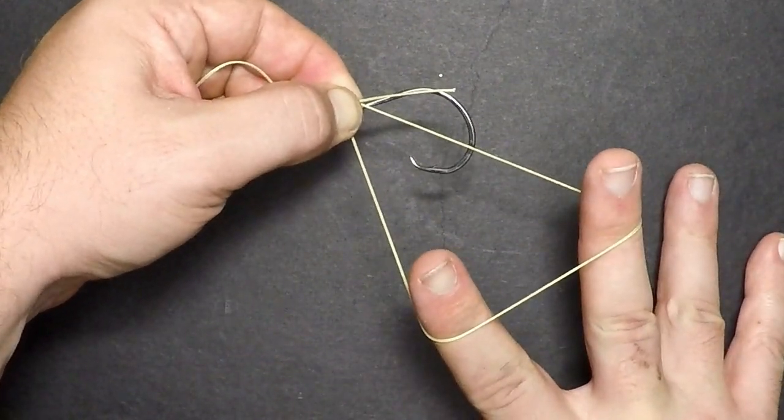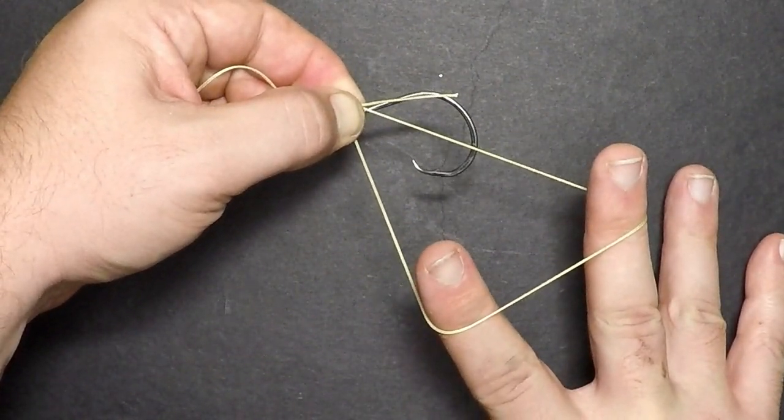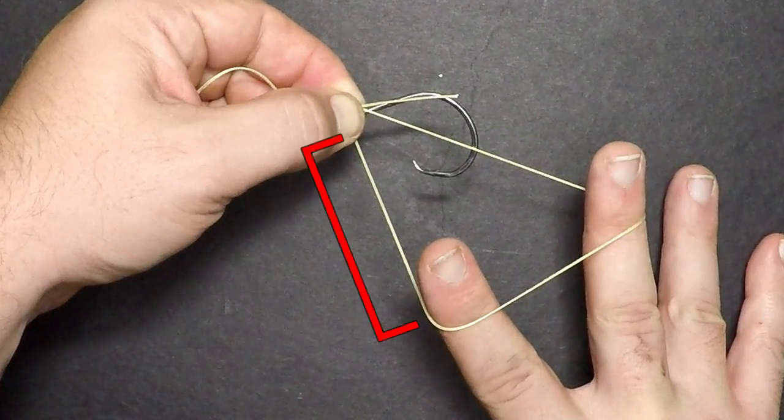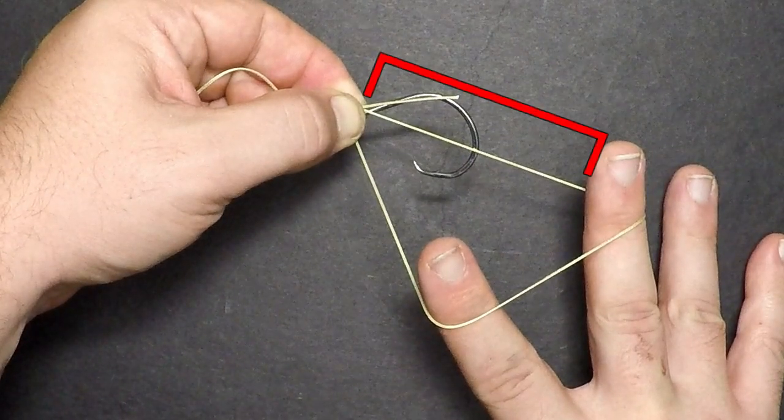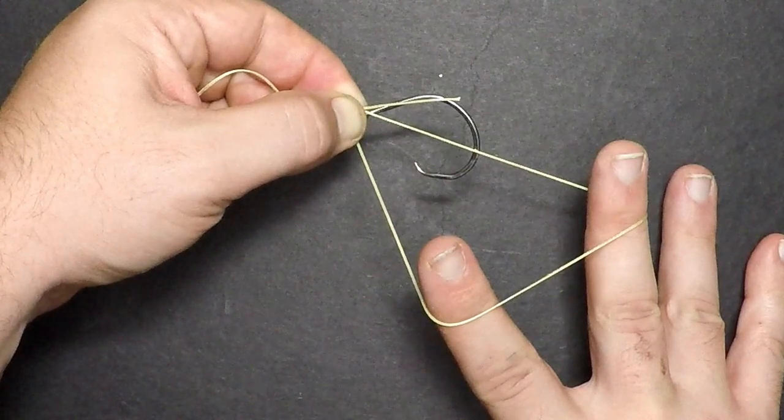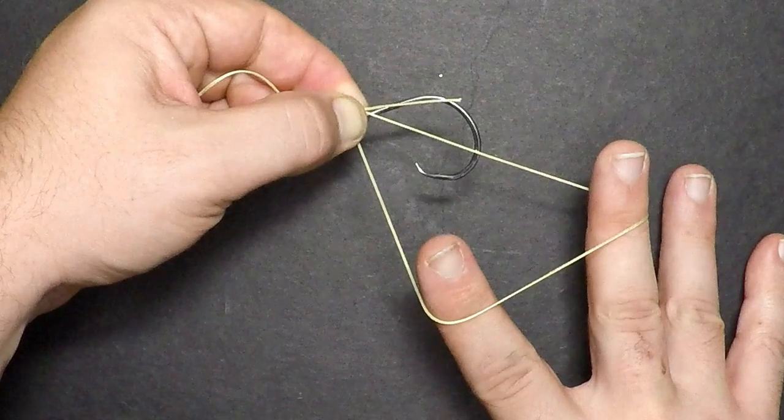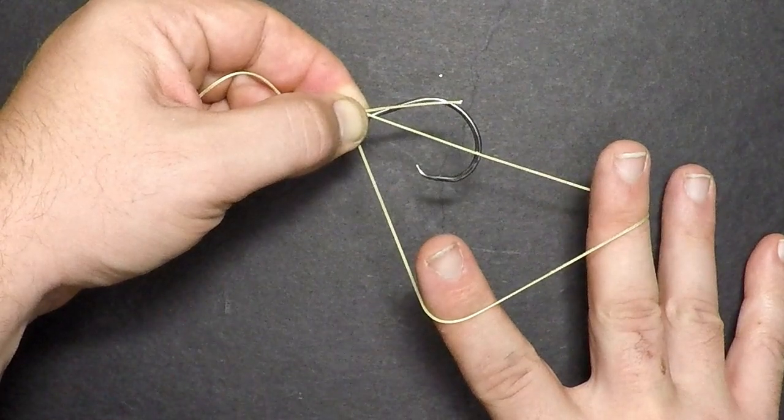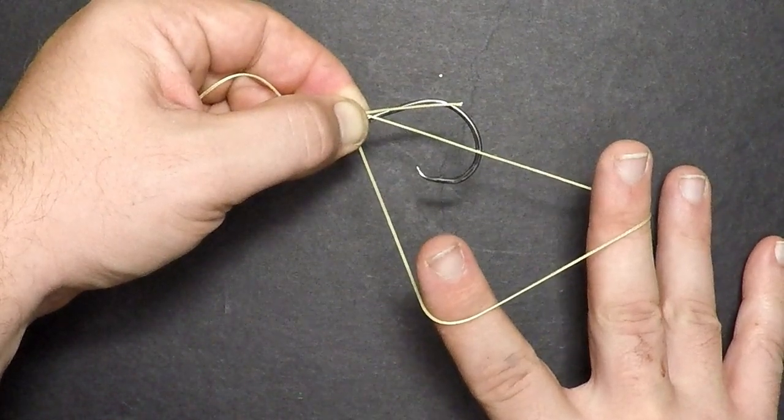Pay attention to this next step, because this is what makes this knot a little tricky. The section of line on my index finger is the upper part of the tag end. The section of line on my middle finger is the lowest part of the main line. As I continue to make the knot, the section of line on my index finger is going to be wrapped around the section of line on my middle finger, the tag end, and the shank.